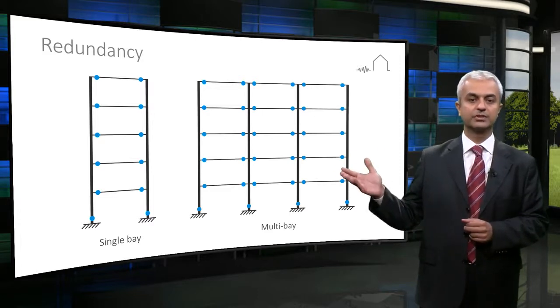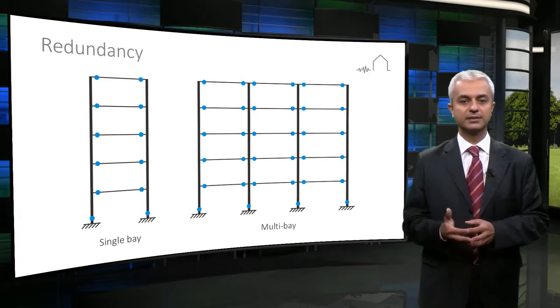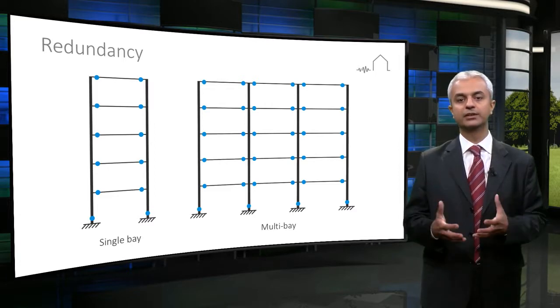In the graph, blue dots are representing the potential plastic hinge locations. If any member fails during the event, a redistribution or resharing of the loads will occur.